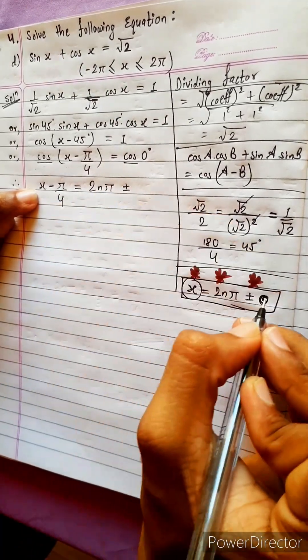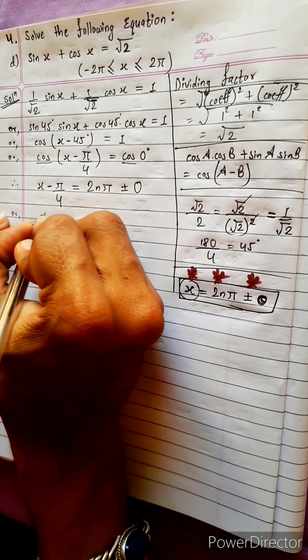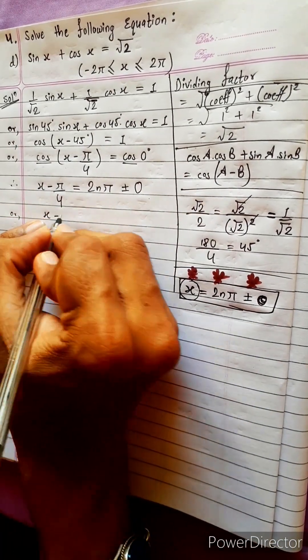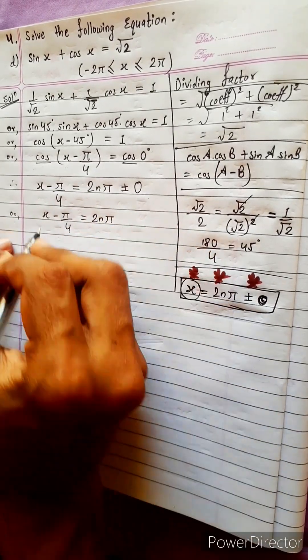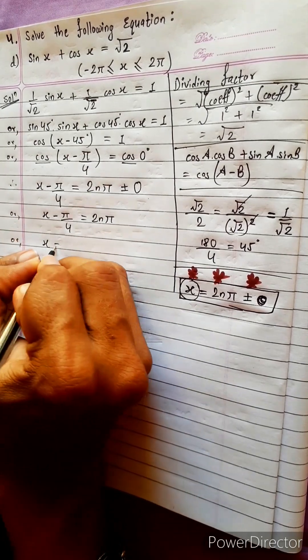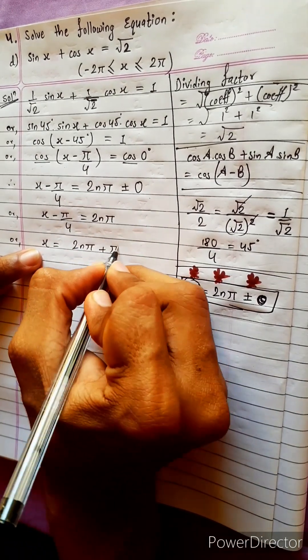This is x equals to 2n pi, 2n pi plus minus theta means angle. Angle is 0, 0 degree, so only 0. Or x minus pi by 4 equals to 2n pi. 0 has no value when it is alone, so 2n pi. x equals to 2n pi. This, let's bring this side, plus pi by 4.